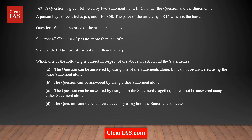Let's do question number 16. A person buys three articles P, Q, and R for 450 rupees, and the price of Q is 16 rupees, which is the least. So, analyzing the information in the question stem: the sum of all three articles — P plus Q plus R — is equal to 50, and the price of Q is 16 rupees, which is the least.